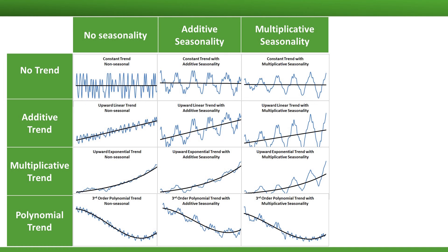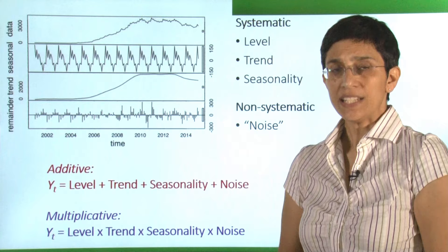Let's refresh our memory with the types of trends and seasonality that are popular approximations for time series. We have additive trend, where the trend grows or decays linearly over time; multiplicative trend, where the trend grows or decays exponentially over time; and a more flexible polynomial trend, which can capture a variety of shapes. Similarly, seasonality can be additive, where each season differs from another by a specific amount, or multiplicative, where each season differs by a specific percentage. Keep these distinctions in mind as we look at advanced exponential smoothing.